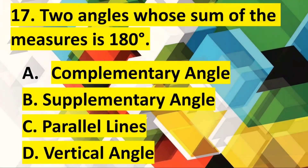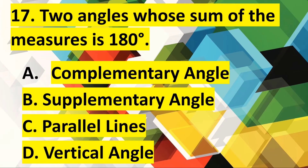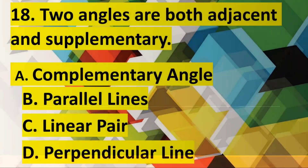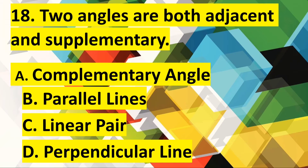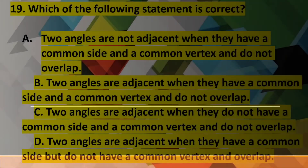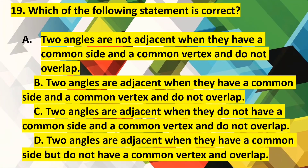Number 17: Two angles whose sum of the measures is 180 degrees. Number 18: Two angles that are both adjacent and supplementary. Number 19: This statement is correct.